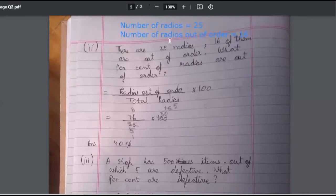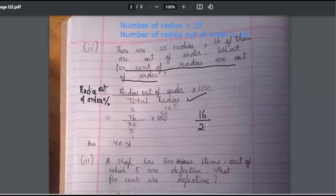Now moving ahead, what we will write here? Percentage of radios out of order. So we will write radios out of order percent. So 16 were there. So 25 becomes 1, and 25 becomes 4. What is 16 into 4?